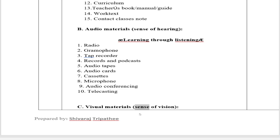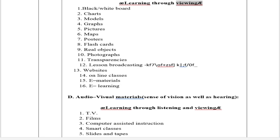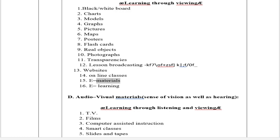C. Visual Materials (sense of vision) — E-learning through viewing guide. Types include: 1. Blackboard/whiteboard, 2. Charts, 3. Models, 4. Graphs, 5. Pictures, 6. Maps, 7. Posters, 8. Flashcards, 9. Real objects, 10. Photographs, 11. Transparencies, 12. Lesson broadcasting, 13. Websites, 14. Online classes, 15. E-materials, 16. E-learning.